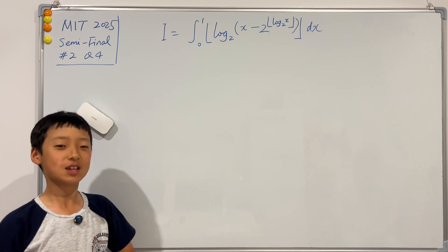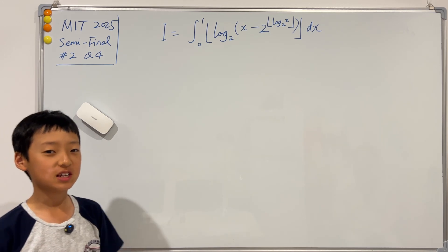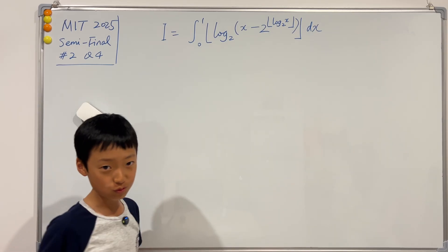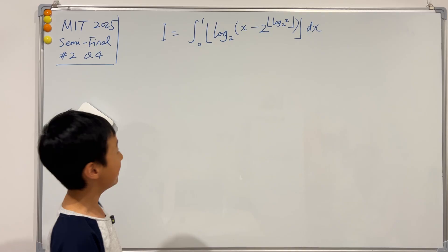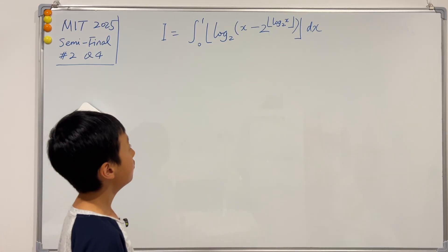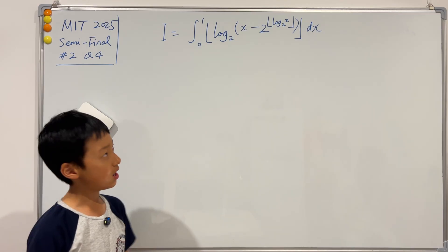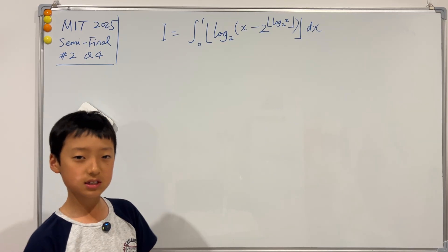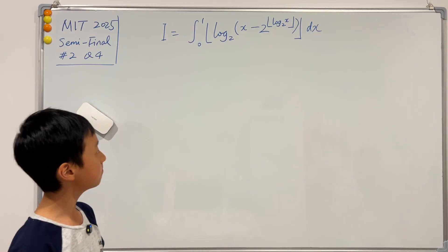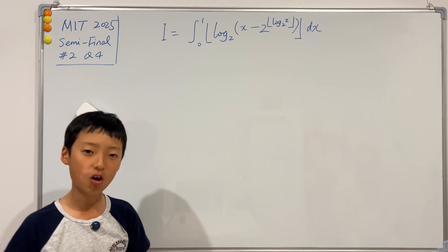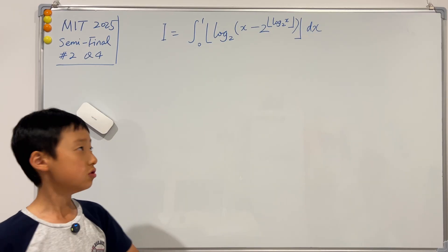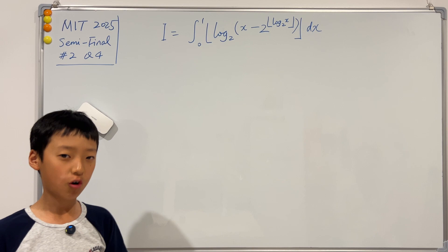Hi guys, welcome back to another video of me teaching. Today I have the MIT 2025 semi-final number two, question four for you guys. Let's get into it. We first look at the integral and we see that it is a double floor function integral. That sounds hard, but actually once you notice some things it won't be too hard.